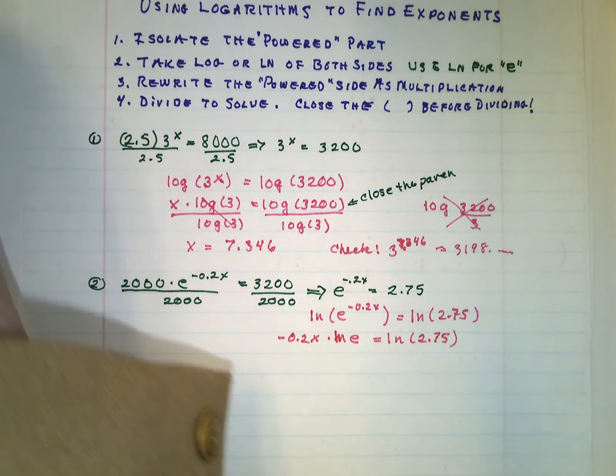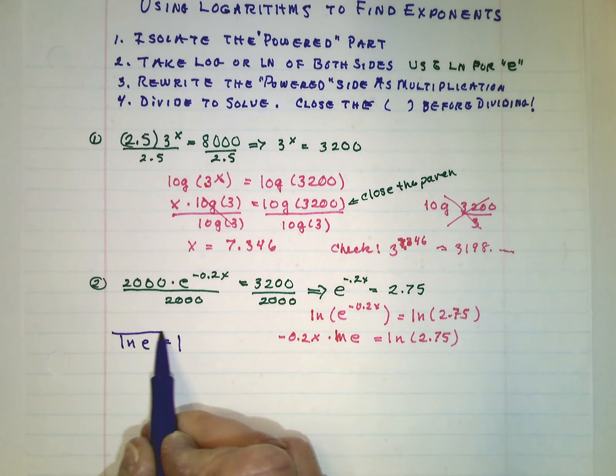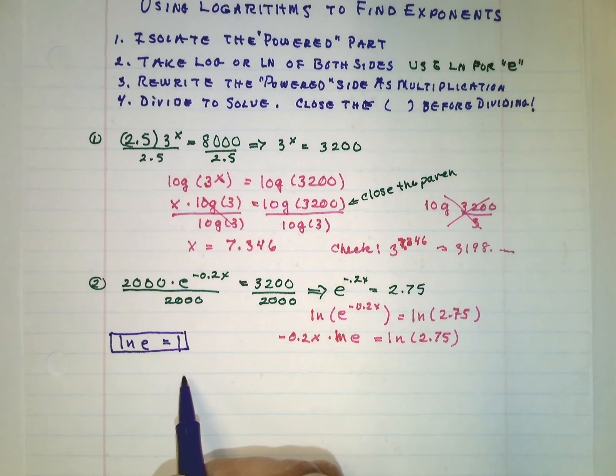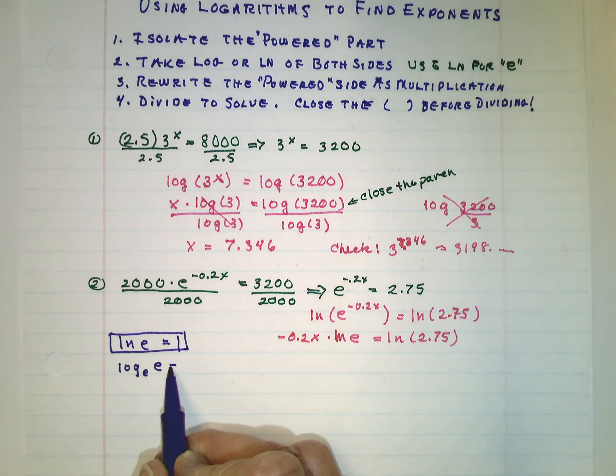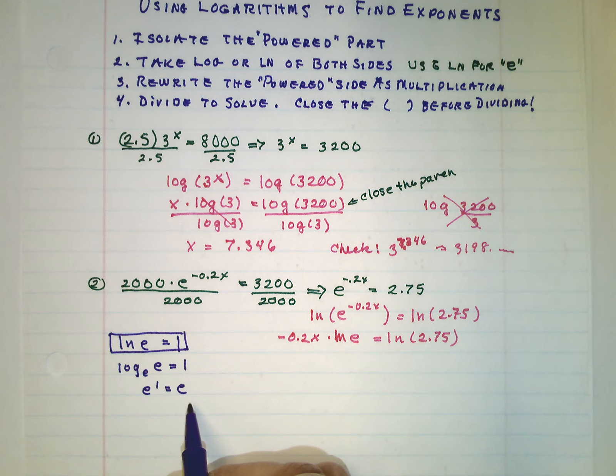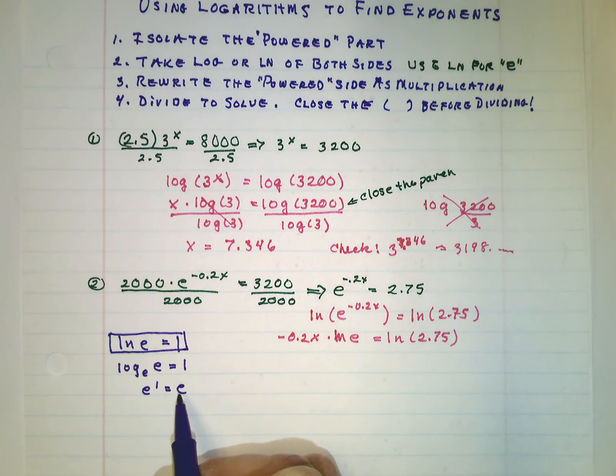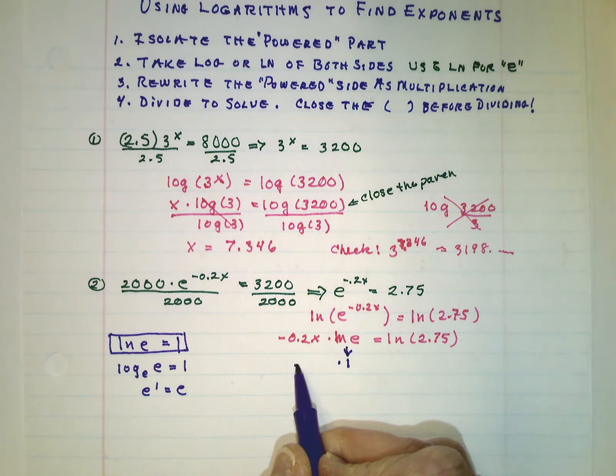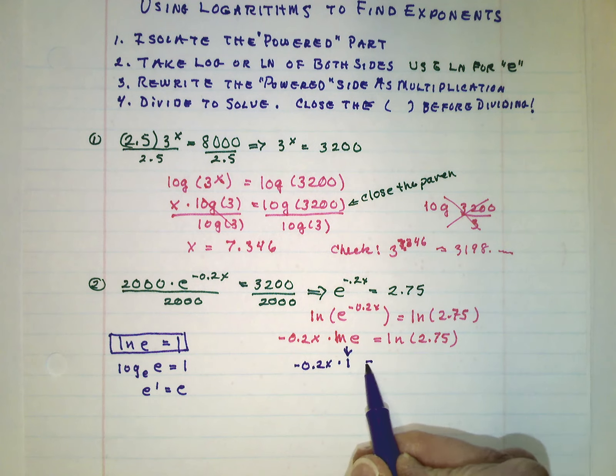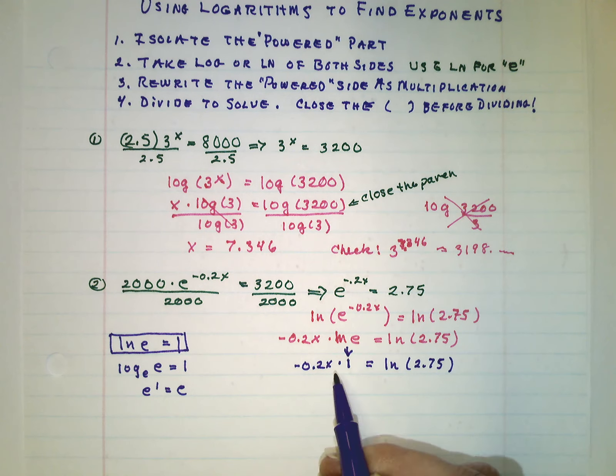Now a wonderful thing happens. The ln of e equals 1. Because this is really log base e of e. And that means we have e to the first power equals e. This says what power do I put on e to get e. And the power would have to be 1. So this thing now is a 1. We are taking negative 2 tenths of an x times 1. And that's going to equal the ln of 2.75. So this is just negative 2 tenths x.